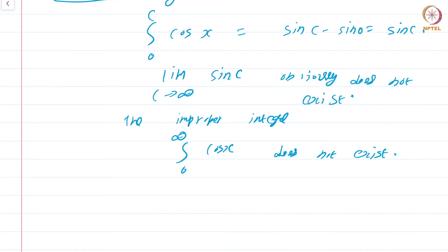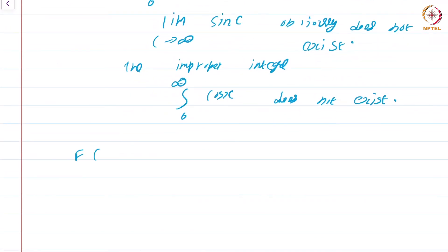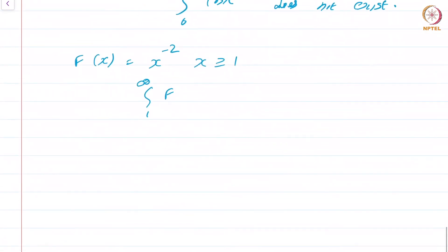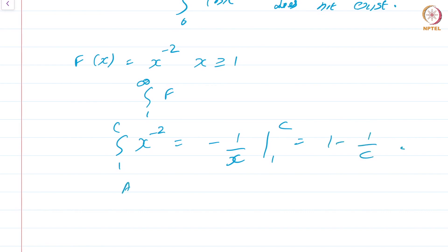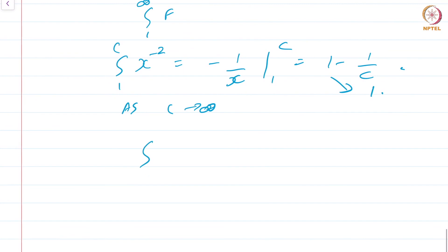Let us see another example. Consider f(x) = x^(−2) for x ≥ 1. Let us try to compute the integral from 1 to ∞ of this function. The integral from 1 to C of x^(−2) dx equals −1/x evaluated from 1 to C, which is 1 − 1/C.